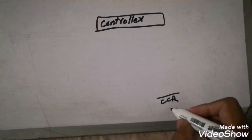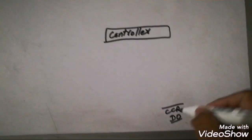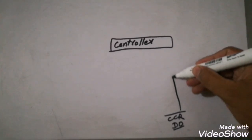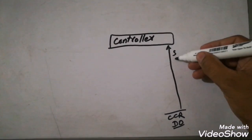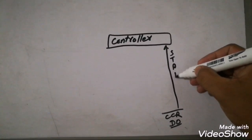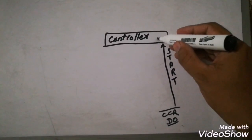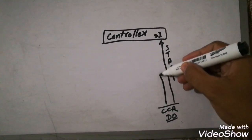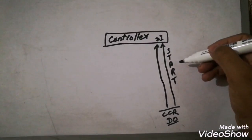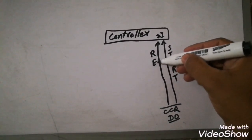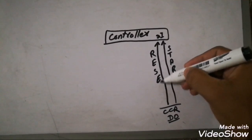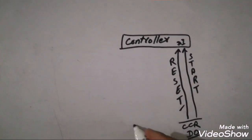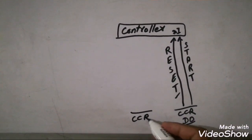First, we will see the CCR digital outputs and digital inputs of the controller. The first digital output from the CCR is the start command — when the operator gives a start command, the PLC generates a digital output which becomes a digital input of the controller. The second DO of the CCR is the reset signal — in case of any fault, the operator resets it and the PLC generates a DO as input to the controller.